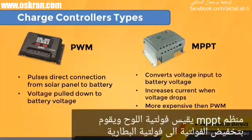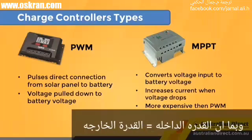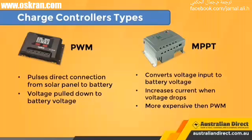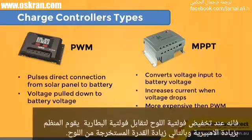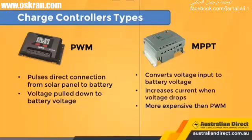MPPT charge controllers measure the VMP voltage of the panel and down-convert the PV voltage to the battery voltage. Because power in equals power out, when the voltage is dropped to match the battery bank, the current is raised. So you are using more of the available power from the panel.